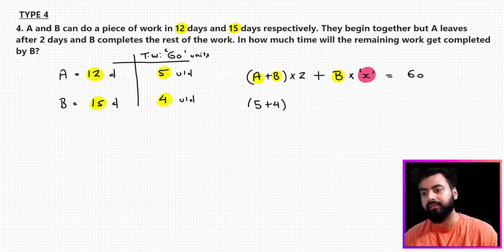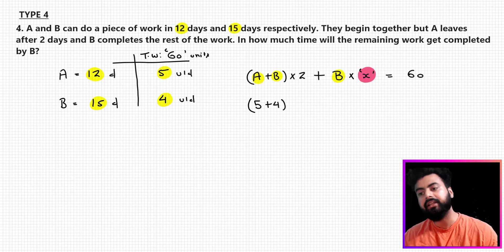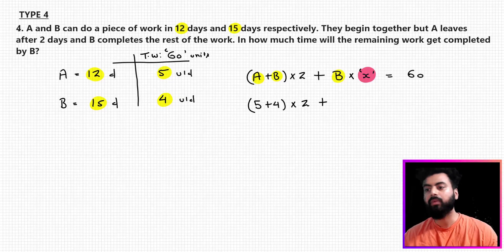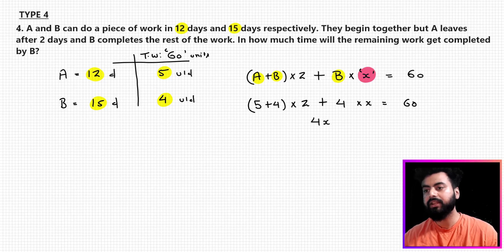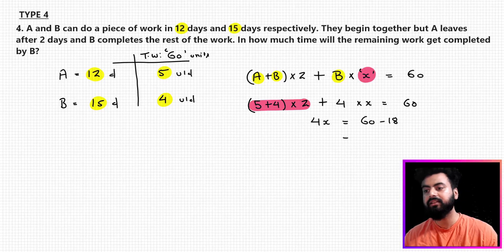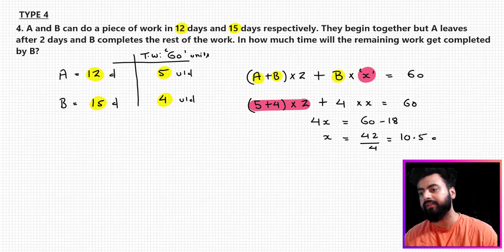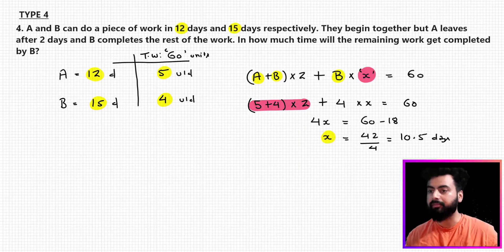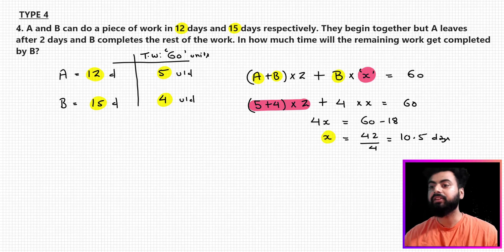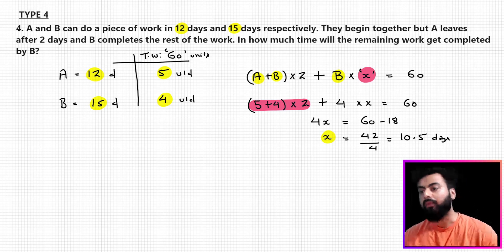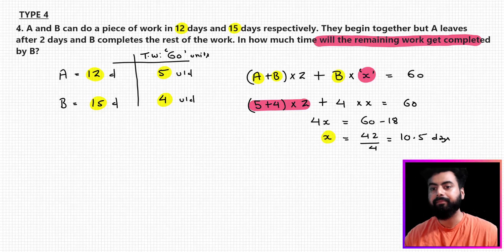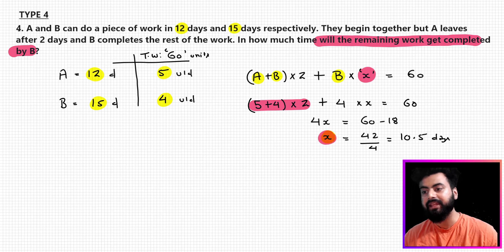Together in one day they complete 9 units (5 + 4). Since they worked together for 2 days, that's 9 × 2 = 18 units. Then B alone works for x days at efficiency 4. So the equation is: 18 + 4x = 60. That gives 4x = 42, so x = 10.5 days. Here x is the number of days taken by B to complete the remaining work, and that is the answer: 10.5 days.